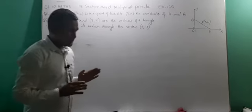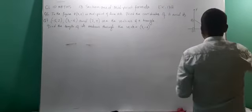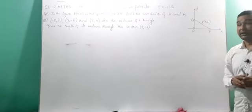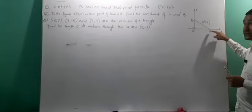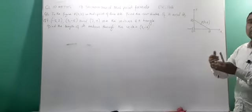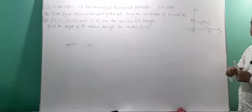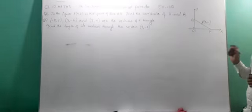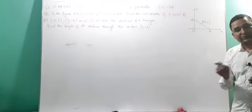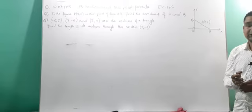Now the main important point is this: if a line intersects any axis, and if it intersects the x-axis, then the value of x will be there and y is 0. If it intersects the y-axis, y will be there and x is 0. Remember this is the main point. Whichever axis is intersected, the value of that axis will be there, then the next variable is 0.